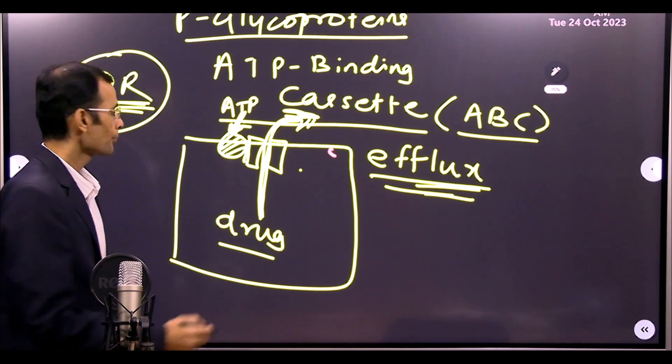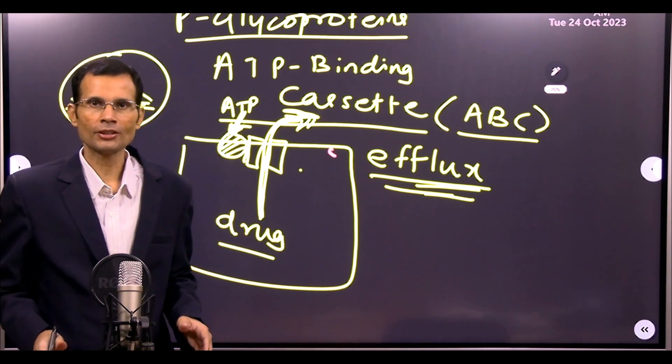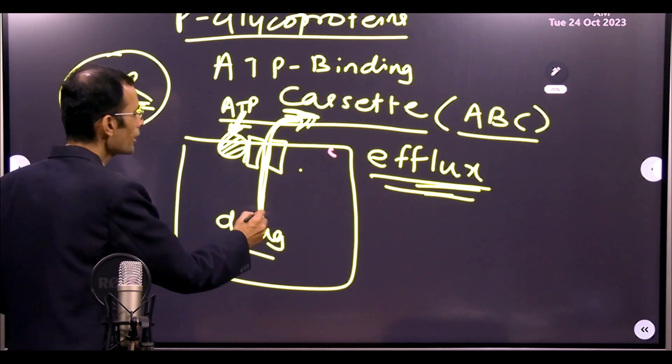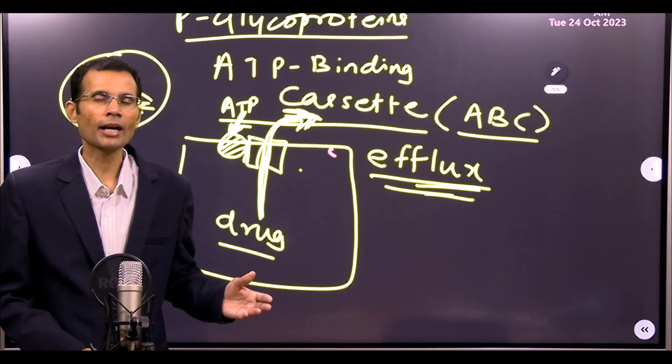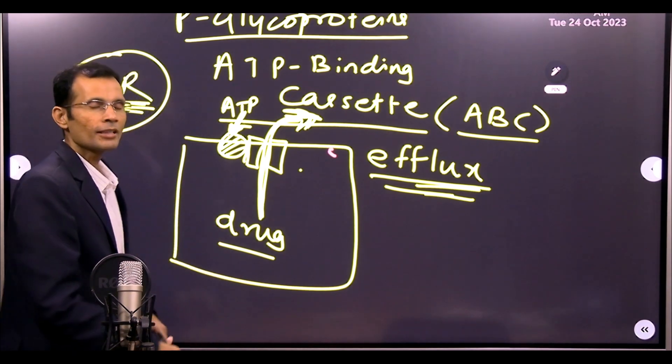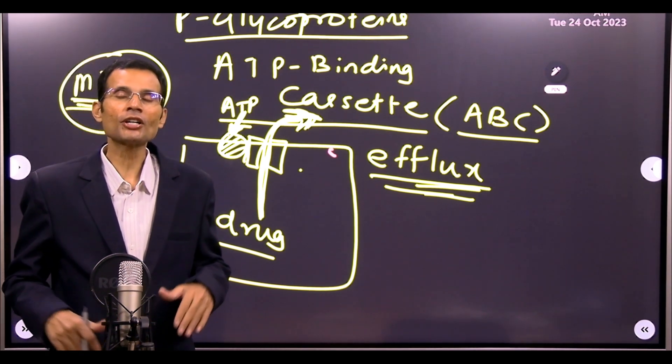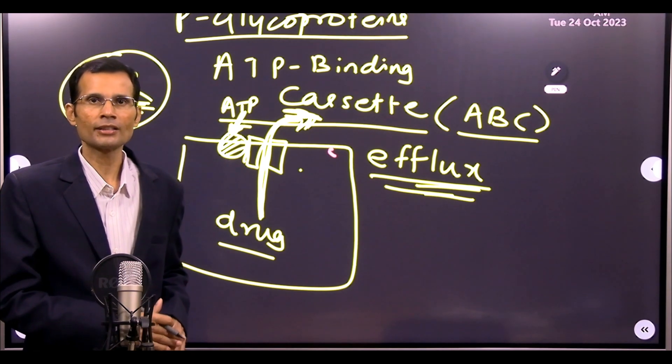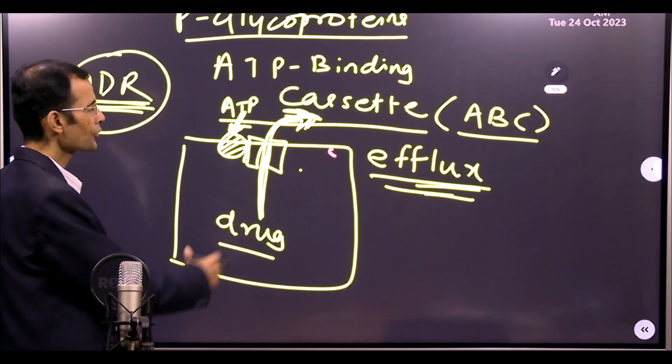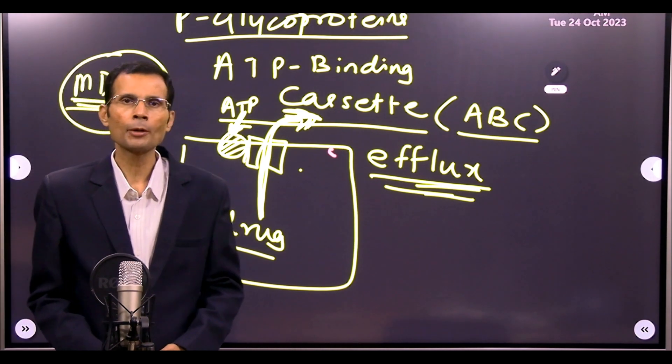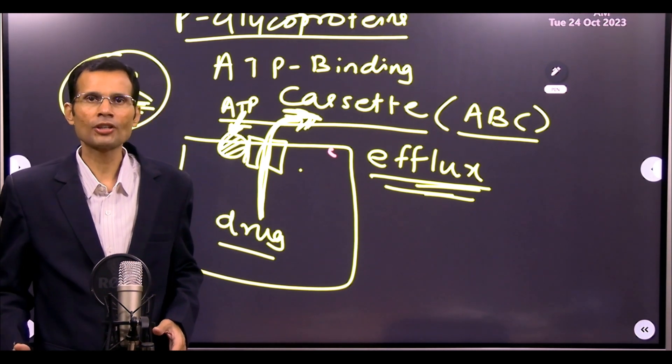So in this case, the drug that was administered, that drug is simply thrown out of the cell. Efflux of the drug happens, which means that the drug will never reach a critical concentration inside the cell. Therefore the cell will become resistant to the action of this drug. It could be an anti-TB drug or anti-cancer drugs.